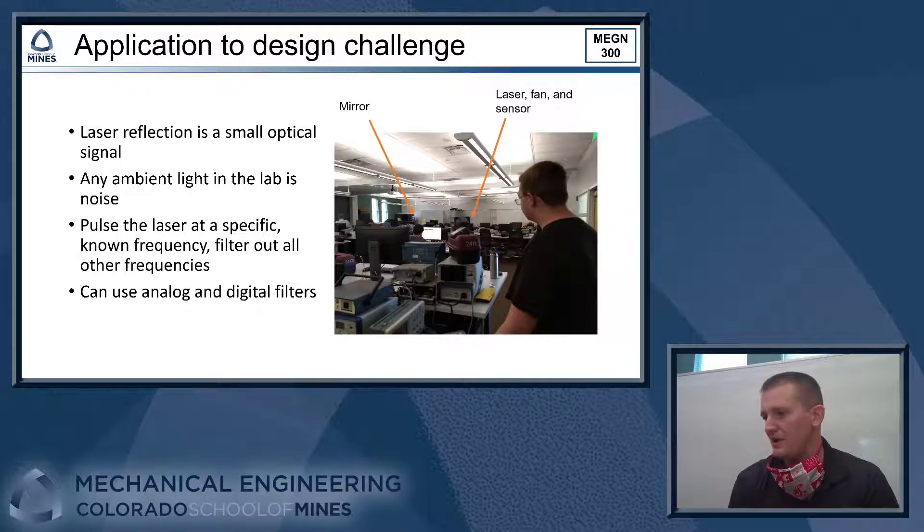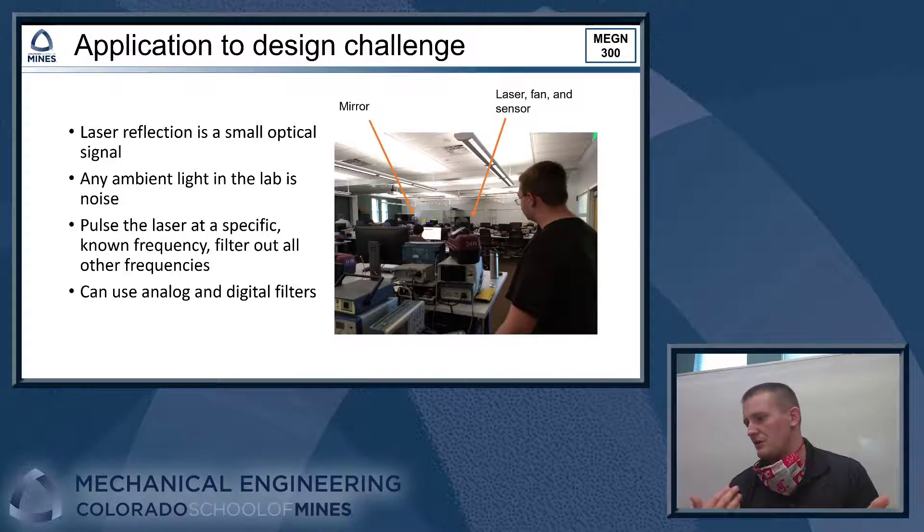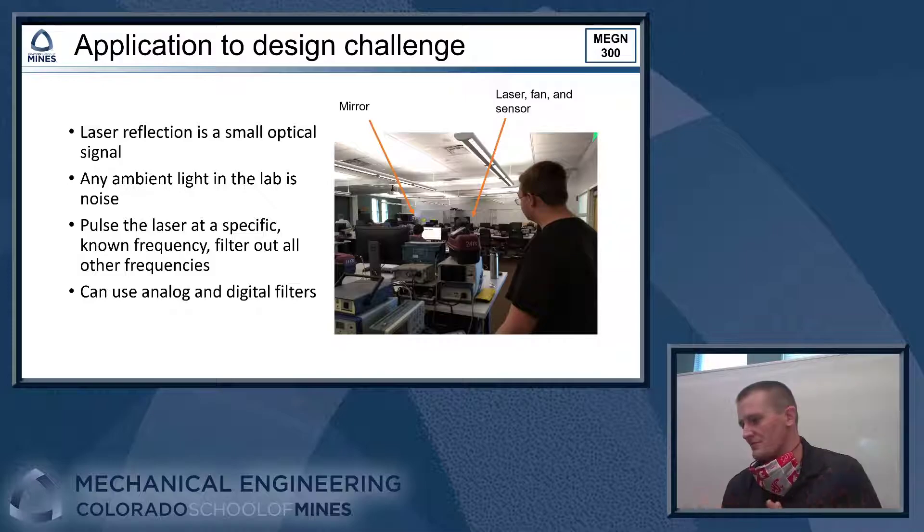How does this apply to your design challenge? So what you're doing in this challenge is you're trying to see a very small optical signal. It's going to be a faint reflection as you get really far away from your source. And you're trying to see your reflection from a long distance away. The light is spreading out across the room. So you have less and less light to work with the further away your reflection is. And any ambient light in the lab is going to show up as noise.